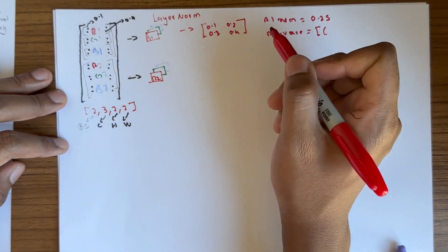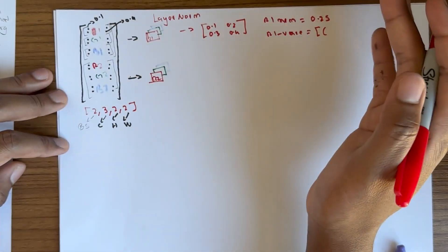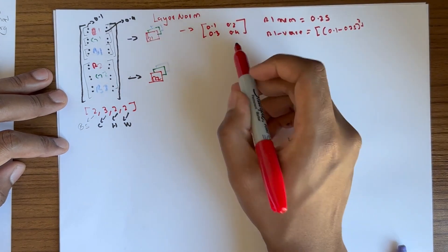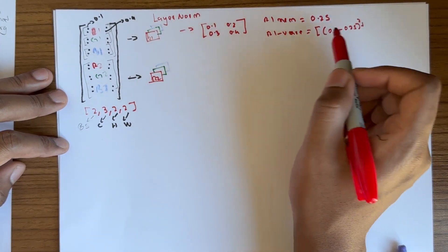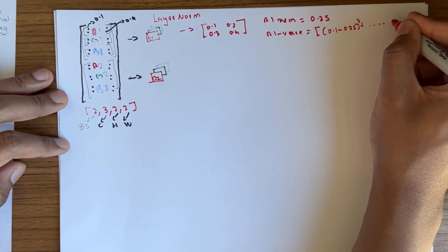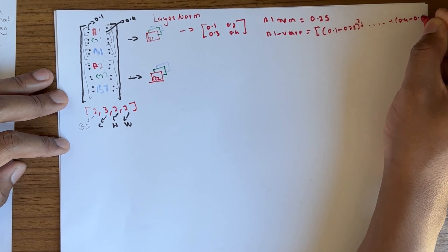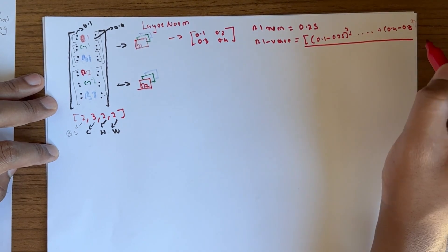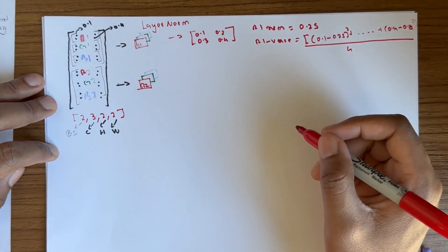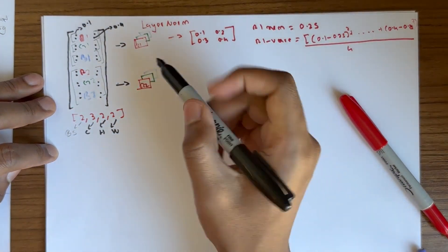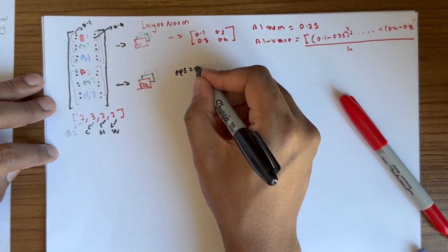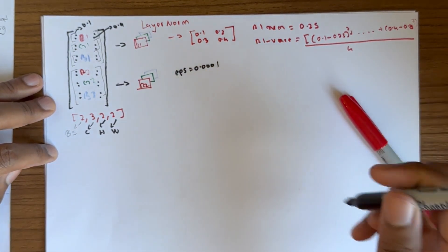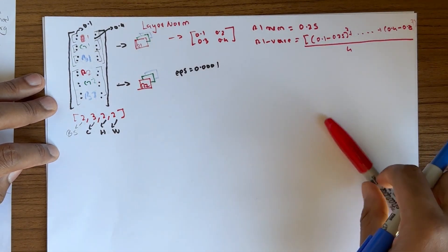How do we compute variance? We take each value, subtract the mean, square it, and sum them. So, (0.1 minus 0.25) squared, plus (0.2 minus the mean) squared, plus (0.3 minus the mean) squared, plus (0.4 minus 0.25) squared, then divide by 4. There's also epsilon, which is a very small number like 0.0001. It's important for the normalization.